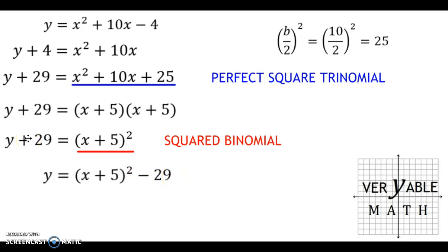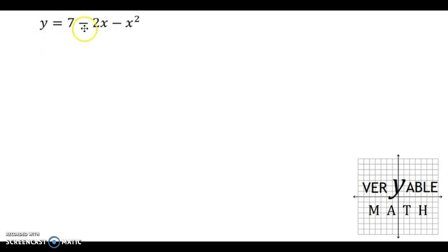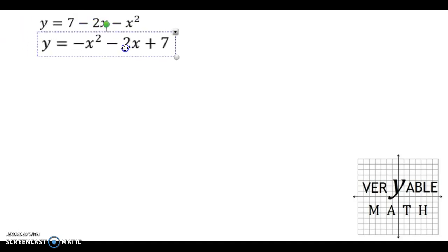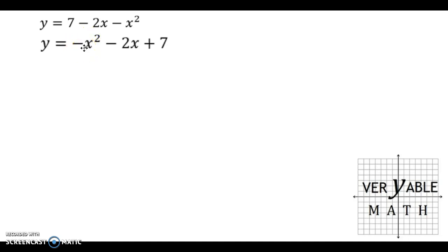Now we're going to take a look at a slightly different example wherein the a value is not equal to 1. In this quadratic equation the a value is actually negative 1, so it's a little bit more difficult to turn into vertex form. The first thing to notice is that it's not in standard form — the highest degree term isn't first. So I'm going to rewrite it so that the highest degree term is first: we have the negative x squared first, the negative 2x stays in the middle, and the positive 7 goes to the end.